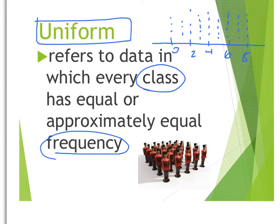but it is approximately uniform, in which each likely number has about the same amount of occurrences. We usually see a uniform distribution when probabilities are approximately equal.